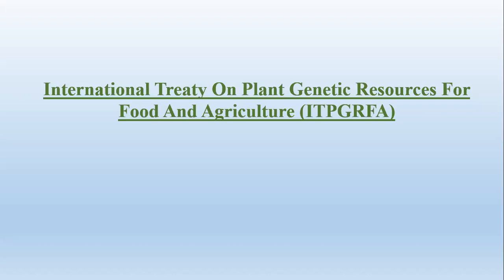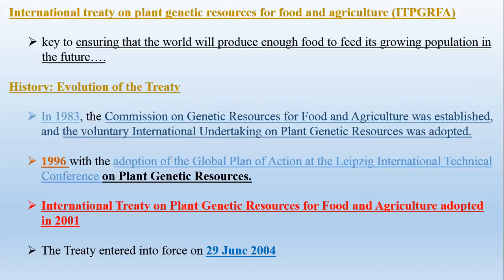The main aim of this treaty is the conservation and sustainable use of plant genetic resources for food and agriculture, ensuring that the world will produce enough food to feed its growing population in the future.